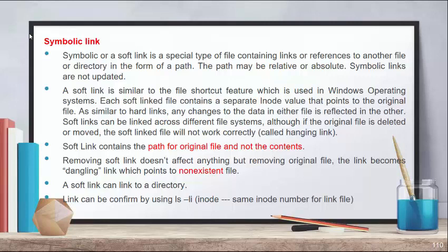Now, symbolic link or soft link: a symbolic link is a special type of file which does not contain the information of the file — it contains only the path of the file. The path may be relative or absolute, and the symbolic link cannot be updated. A symbolic link is similar to a file shortcut.